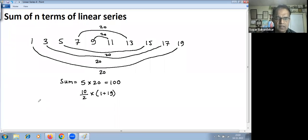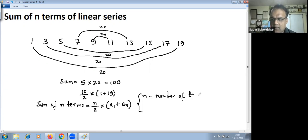So to generalize further, sum of n terms equal to n divided by 2 into a1 plus an. This is the first term, let's denote it as a1, and this is nth or last term, that is an. So there is a general formula with which you can get sum of n terms of any linear series, where n refers to number of terms, a1 refers to first term, and an refers to nth term or last term.